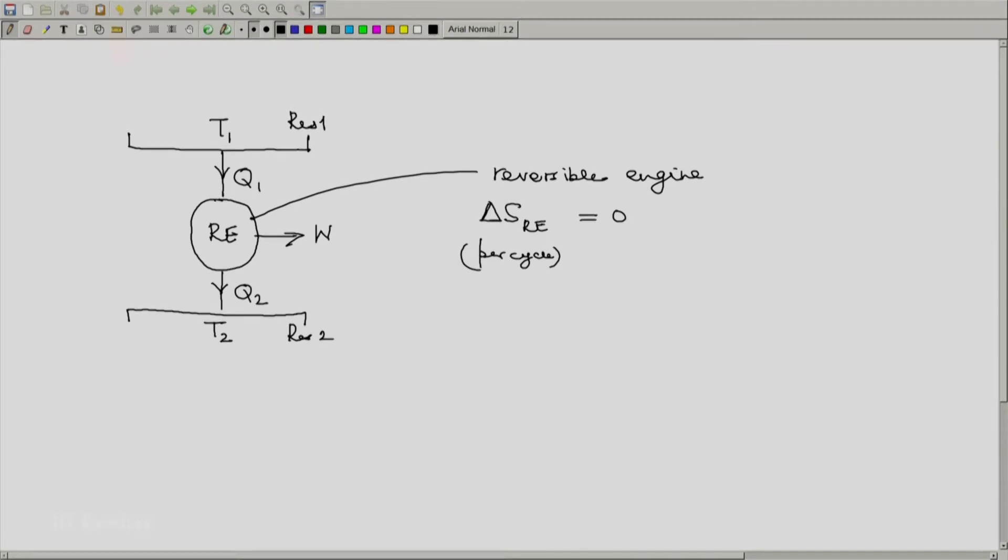But let us evaluate this and we will notice that this is 0, but it should also be equal to... Now notice that this q1 is absorbed when the temperature of the system, that is the reversible engine, is T1.